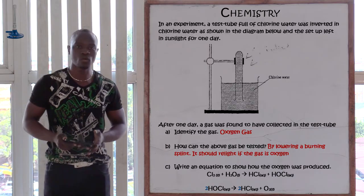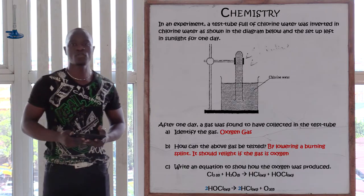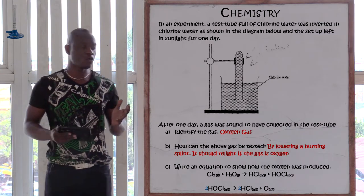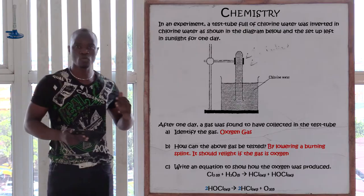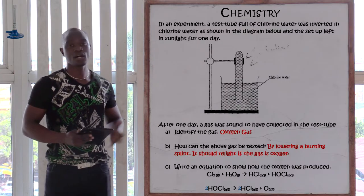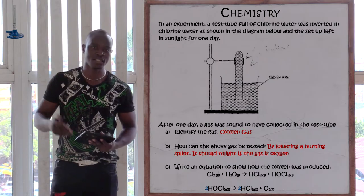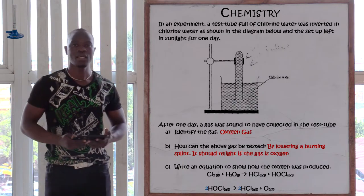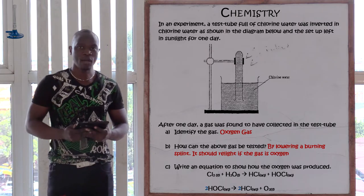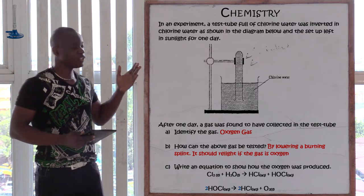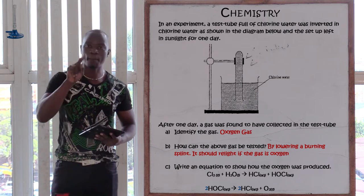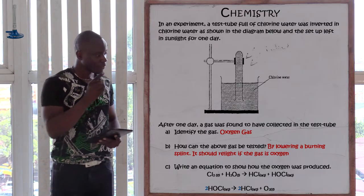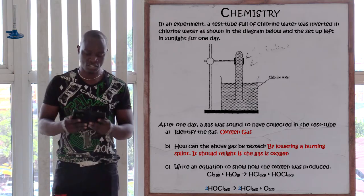To balance the decomposition equation, we add two in front of chloric(I) acid, meaning hydrogen has two molecules, oxygen has two, and chlorine has two. On the other side, we add two in front of hydrochloric acid, giving two hydrogen and two chlorine, plus one molecule of O2, and the equation is balanced.